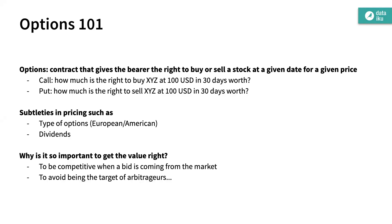If you look at a European option — because American options are a bit harder to explain — European options are just the right to buy a specific asset at a certain price at a certain point in time. It's very important to get the value right from a trader's perspective in order to be competitive in the market and for risk purposes. There are a lot of arbitrage strategies that focus on tiny variations of this evaluation, so there are already a lot of smart minds and techniques that have been tried.